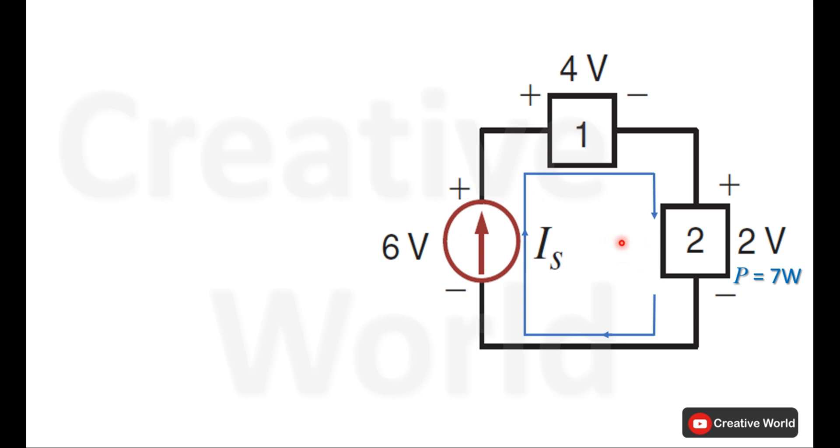Now Is is passing through this element, voltage across this element is given and the power of this element is also given. We can use the power formula to calculate the current Is. P2 is 7 Watt.